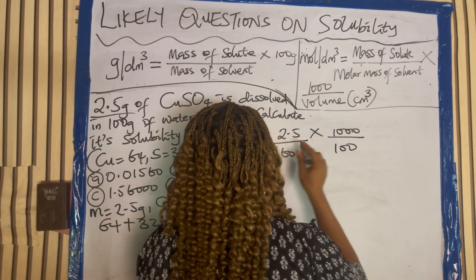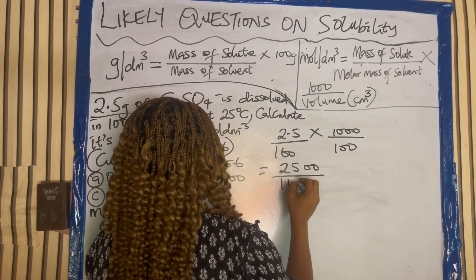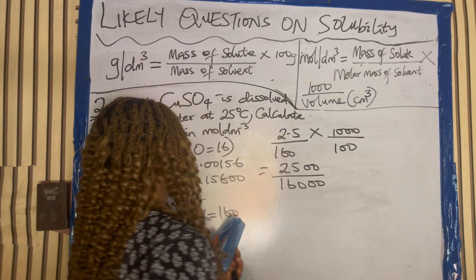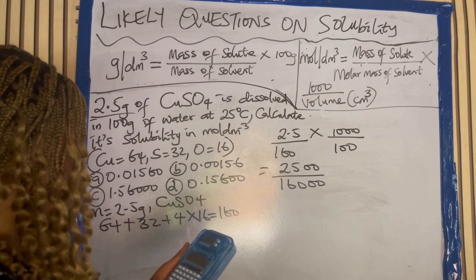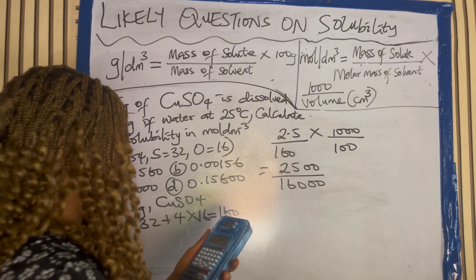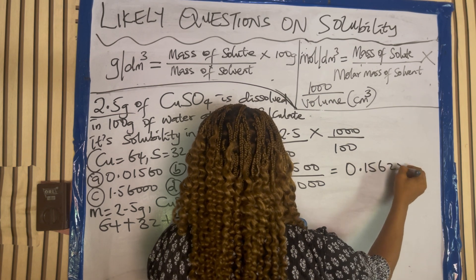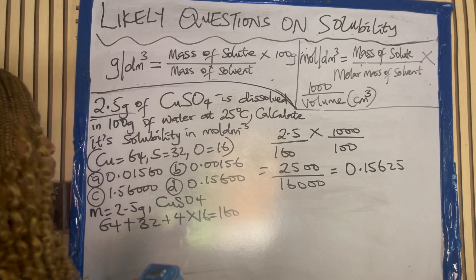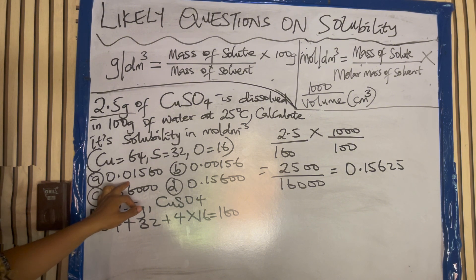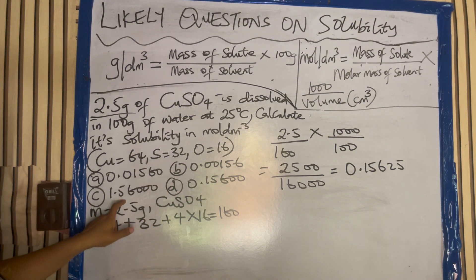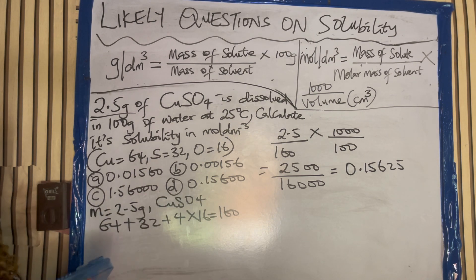Divided by 100. So you have 2500 all over 1600. Solving: 2500 divided by 1600 gives you 0.15625. Looking at the options: 0.15 — yes. So this would be 0.156 mole per dm cube.